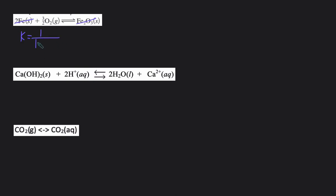1 divided by the concentration of O2 raised to the power of 3 over 2. We can also write Kp, which is 1 divided by the pressure of O2 raised to the power of 3 over 2.